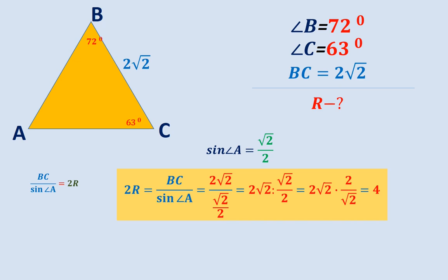So 2 times R is equal to 4, which means that R is equal to 2. So the problem is solved, the radius of the circle is equal to 2.